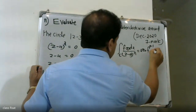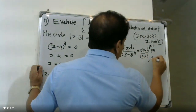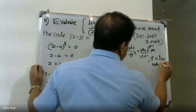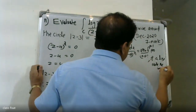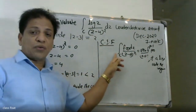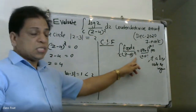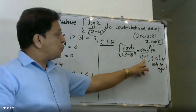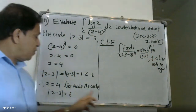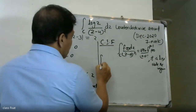Cauchy's Integral Formula states: the integral of C f(z) dz, where a lies inside the region, is equal to 2πi divided by (n minus 1) factorial, multiplied by f raised to the (n minus 1)th derivative evaluated at a, provided a lies inside the region.